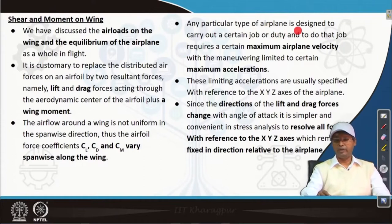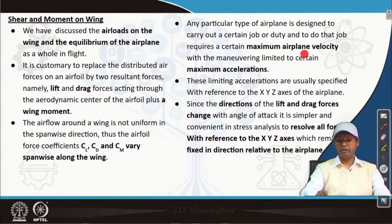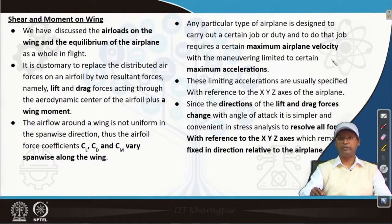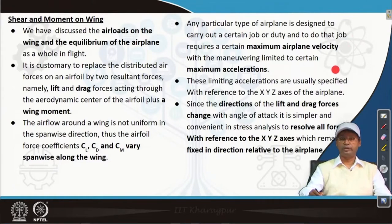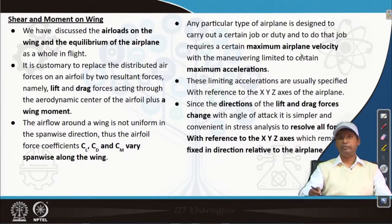Any particular type of airplane is designed to carry out a certain job and to do that job requires a certain maximum airplane velocity. From the flight envelope we are introduced to this — it is a major factor for airplane design, with maneuvering limited to a certain maximum acceleration. The flight envelope gives us the maximum acceleration, and if we do a unit analysis then from that we can easily go for any acceleration level and velocity.